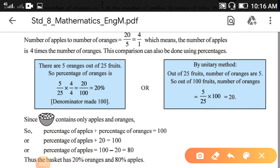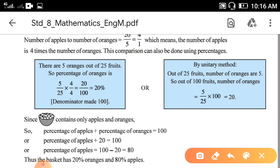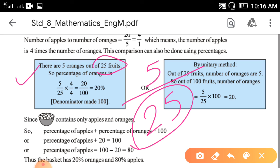One more thing: if you want to do this comparison using percentage, you can also do it. The number of oranges is 5 out of 25 fruits total. Remember, the total you have to write in the denominator, and how many oranges (5) you have to write in the numerator.